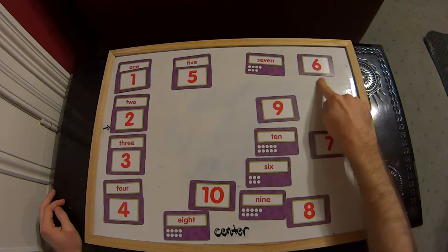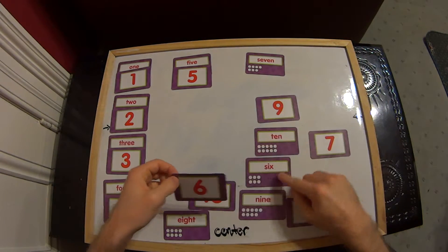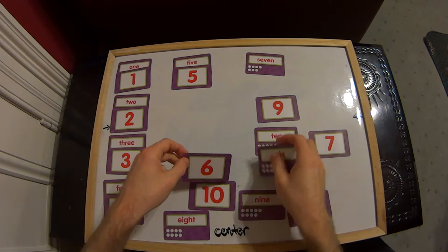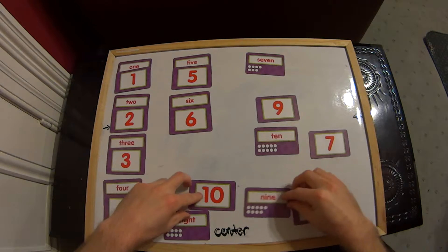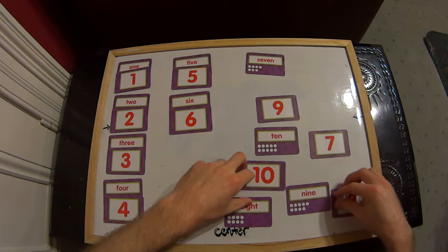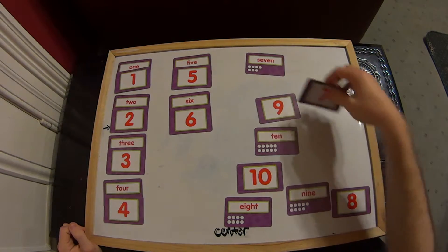Now we're looking for the number 6, and the word 6 to match that. Now we've only got a few left. So next we want to find 7, and then also the word 7. Beautiful.